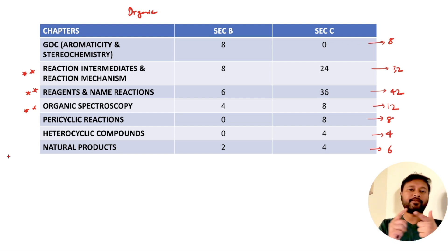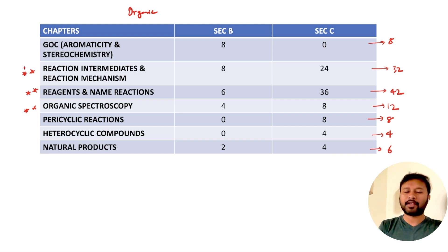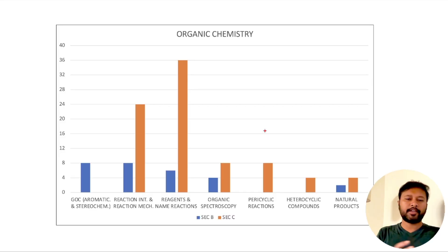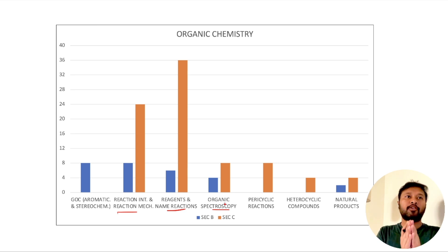If you are focusing on inorganic and physical chemistry and want to cover some organic chemistry as well, the three star organic topics are most important. If they seem difficult, you can look at comparatively easier topics like pericyclic reactions, GOC, and organic spectroscopy — you can solve those without digging too deep into organic chemistry details. The topics with the highest bars on the chart are reaction intermediates and mechanism, reagents and name reactions, and organic spectroscopy.